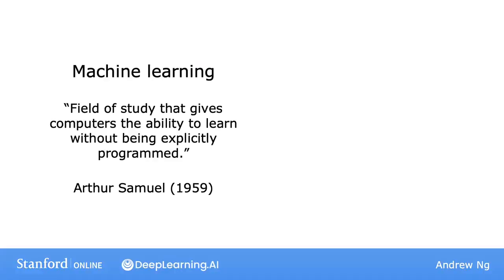Here's a definition of what is machine learning that is attributed to Arthur Samuel. He defined machine learning as the field of study that gives computers the ability to learn without being explicitly programmed.